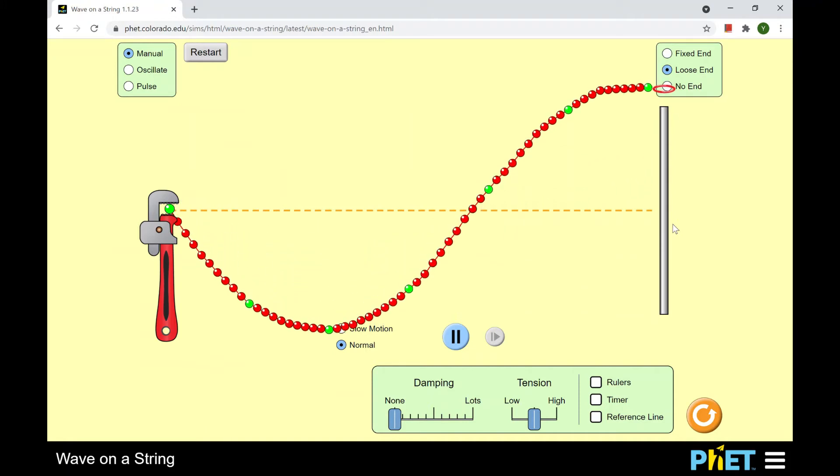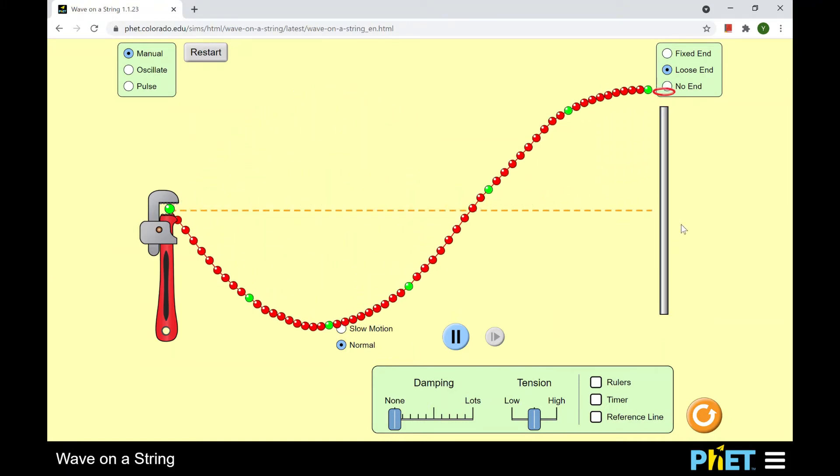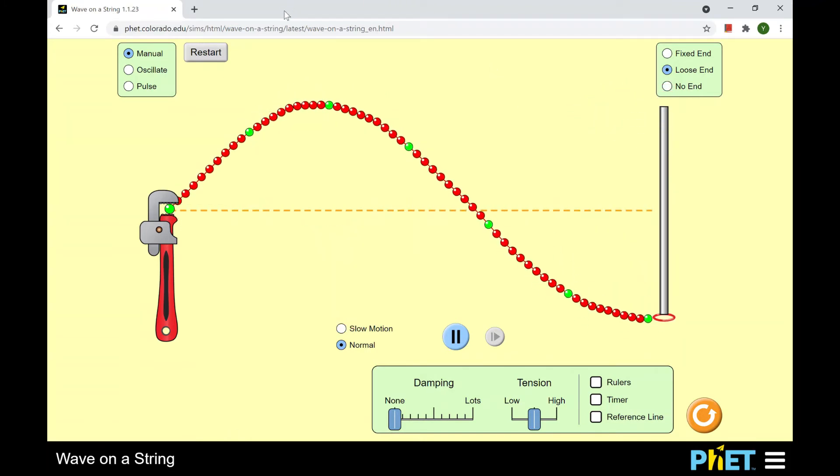This is n equal to three. n equal to two is not possible because the loose end will always be an antinode. So that's why for the fixed to loose end, we say the even harmonics are missing. So we will only have n equal to one, three, five, and so on.